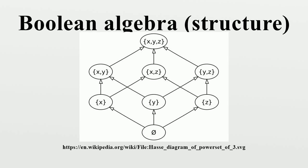A homomorphism between two Boolean algebras A and B is a function f: A → B such that for all a, b ∈ A, f(a ∨ b) = f(a) ∨ f(b), f(a ∧ b) = f(a) ∧ f(b), f(0) = 0, f(1) = 1.